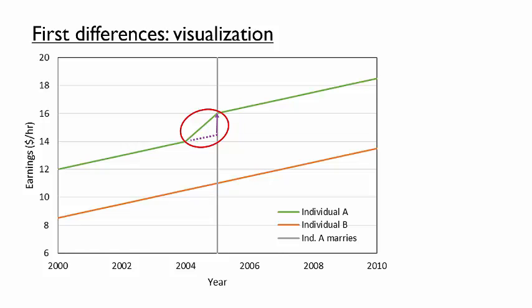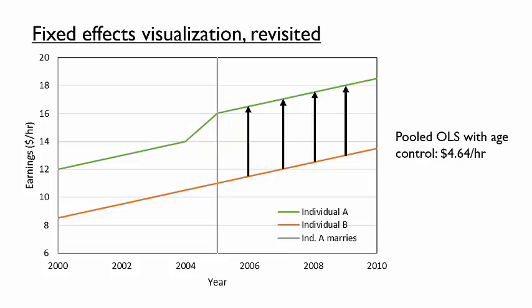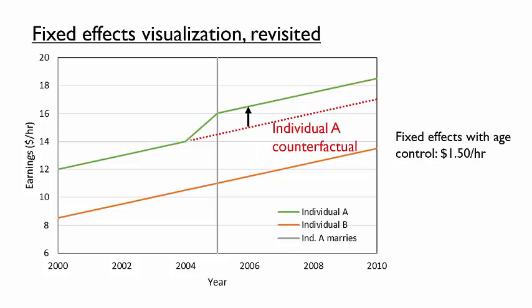Although the three methods for estimating a fixed effects model involve different procedures — and the first differences method yields different results — all rely on the idea of looking at changes within an individual or other unit of the panel data. Unlike the pooled OLS regression, which attributed the difference in earnings between a married and unmarried individual to the effect of marriage, the fixed effects regression looked at changes in earnings within an individual whose marital status changed over time. In many cases, including this example, the unobserved time-invariant differences between individuals are probably correlated with the independent variable of interest, making a fixed effects model a prudent choice.